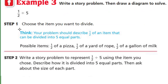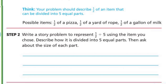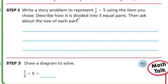For example three: one half divided by five. Choose the item you want to divide. Your problem should describe one half of an item that can be divided into five equal parts. Write a story problem to represent one half divided by five using the item you chose. Describe how it is divided into five equal parts, then ask about the size of each part. So to do a word problem — well, what am I going to pick? As much as I really love pizza, I am going to use the pizza problem. Let's share — sharing is caring.